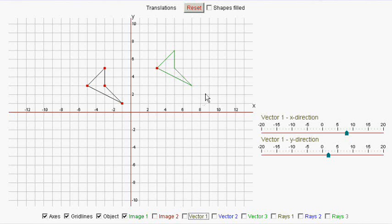And to describe a translation, what we have to do is describe how far it's moved and in what direction. Or, much easier, just how far it's moved in two different directions.